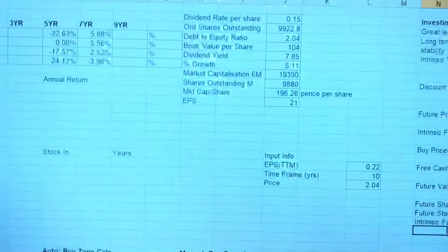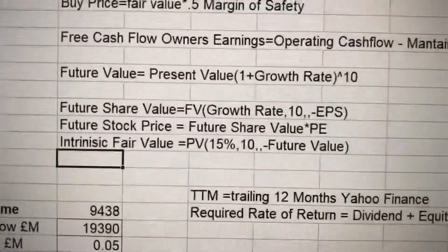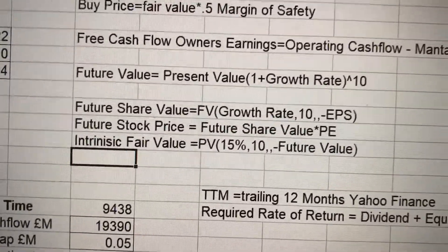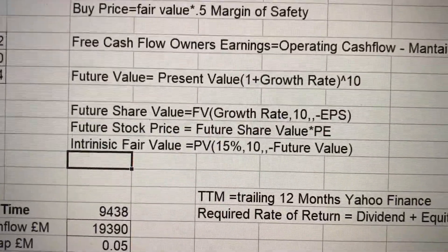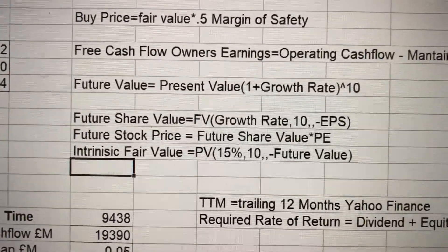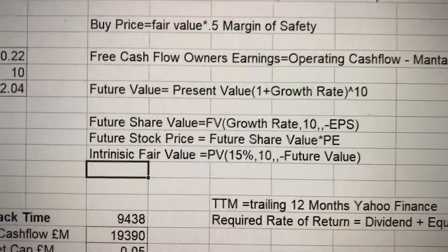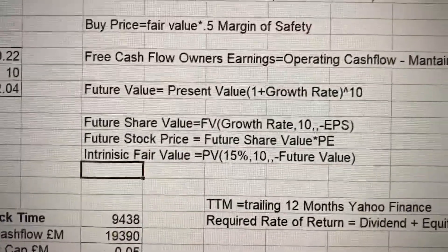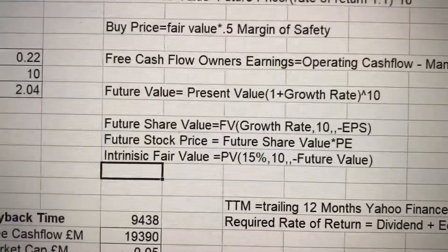This is the bigger spreadsheet calculator, and it's really just to show you the calculation figures for the MOS figure — the buy price. First of all, you need to calculate the future share value. In Excel, type in equals FV; it comes up with open brackets. You then type in the growth rate taken from MSN Money, comma 10 because we're looking 10 years into the future, then comma comma and then minus the forward earnings per share from MSN Money, and close the brackets. Then work out the future stock price, which is the future share value you've just calculated times the PE ratio.